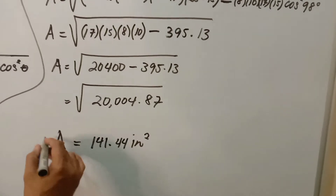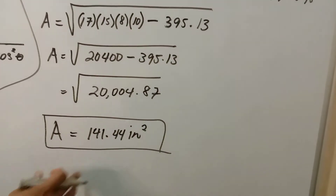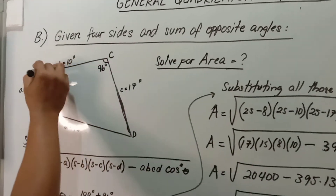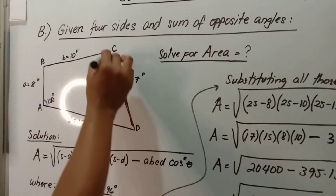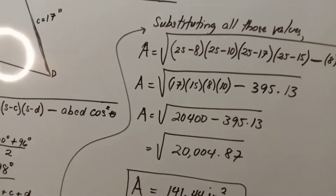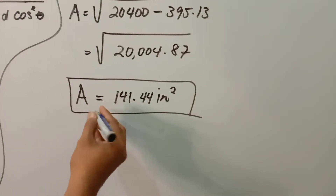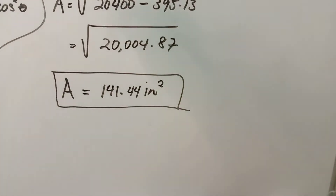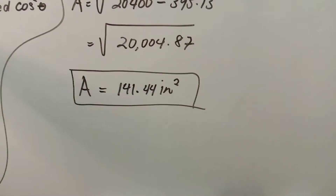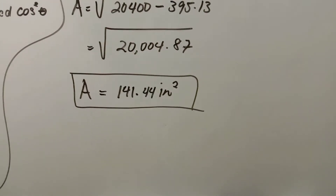So the area is 141.44 square inches. This is the total area of this quadrilateral having unequal sides. The final answer is Area = 141.44 square inches. Units are in square inches because all given sides were in inches, and units must be consistent.